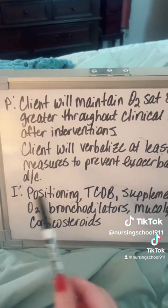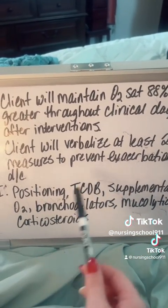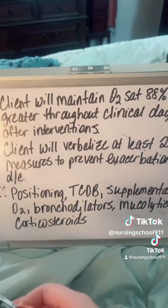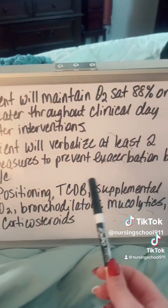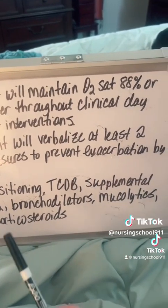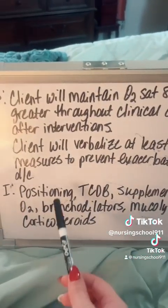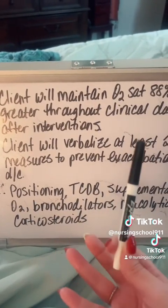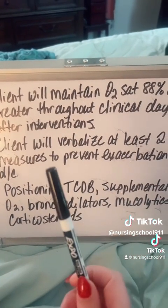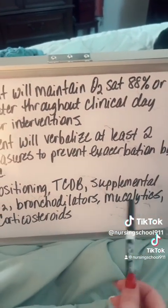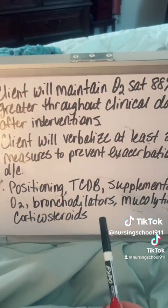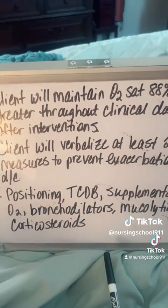Our interventions include positioning the patient upright or prone as appropriate, turning, coughing, and deep breathing at least every two hours. We'll offer supplemental oxygen and positive pressure ventilation as needed — but not too much oxygen. We'll also administer medications including bronchodilators, mucolytics, and corticosteroids to help with airway inflammation.